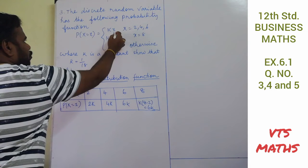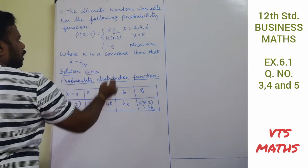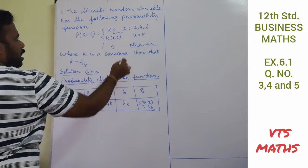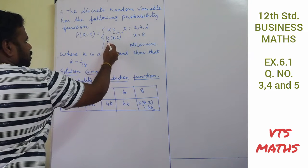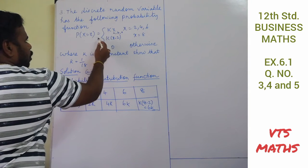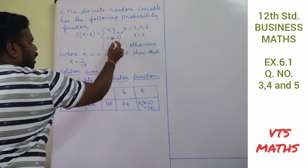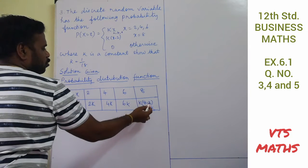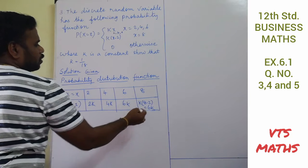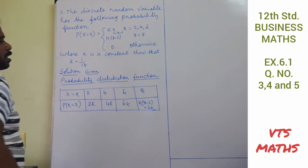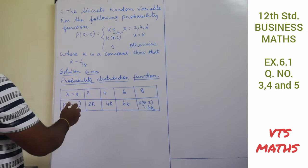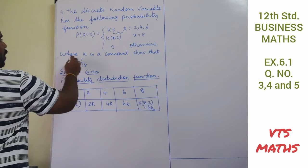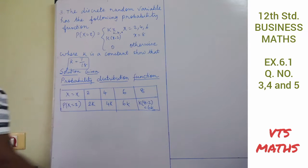For x = 8, we use the second formula p(x) = k(x-2), so k(8-2) = 6k. So the probability values in the table are 2k, 4k, 6k, and 6k.